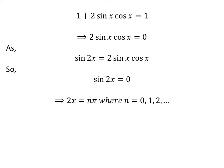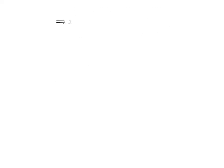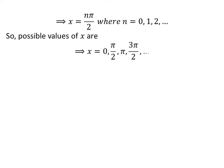Sin of 2x equals 0 is only possible when 2x is equal to n times pi, where n is 0, 1, 2, and so on. Taking 2 to the left gives us x is equal to n times half of pi. So, possible values of x are 0, half of pi, pi, 3 times half of pi, and so on.